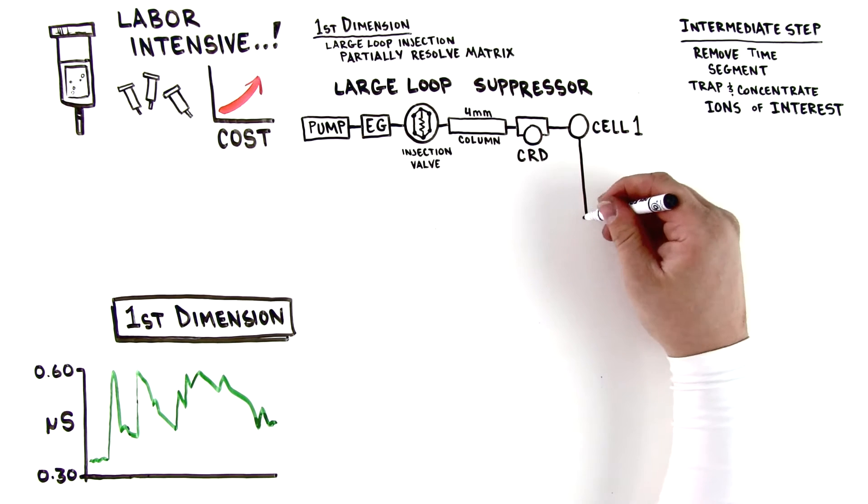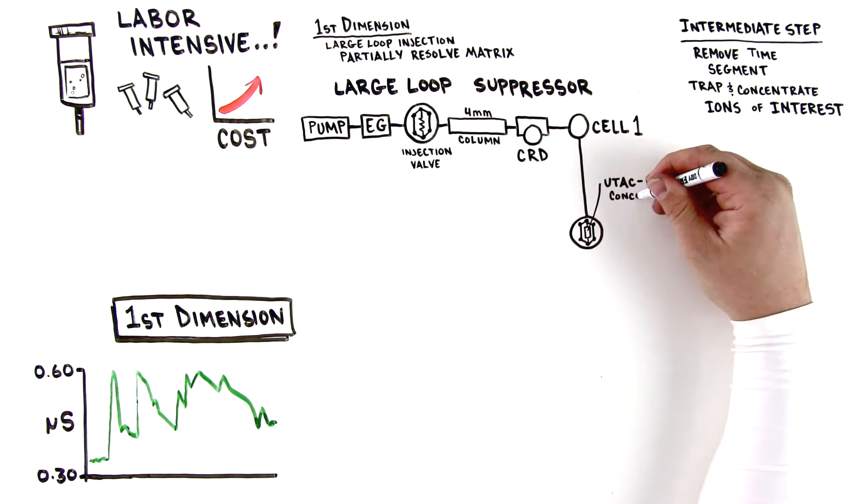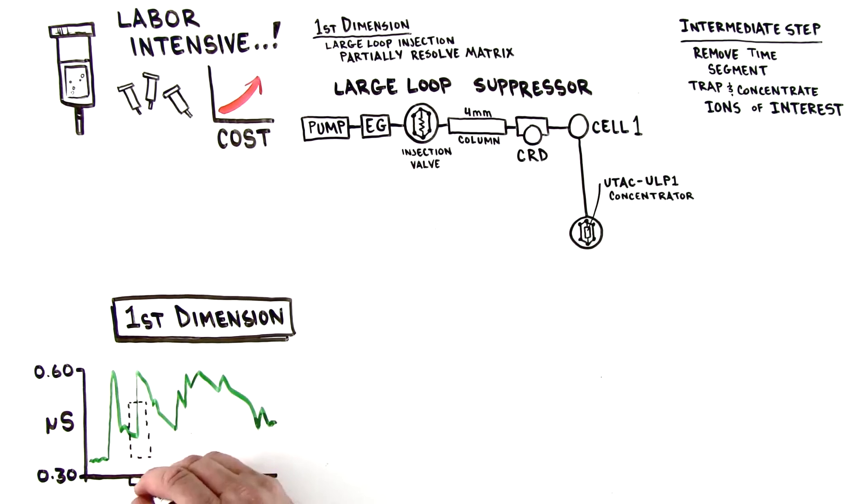Second, the analyte peak is partially resolved in the first dimension, and that time segment is sent to a concentrator column while matrix is sent to waste.